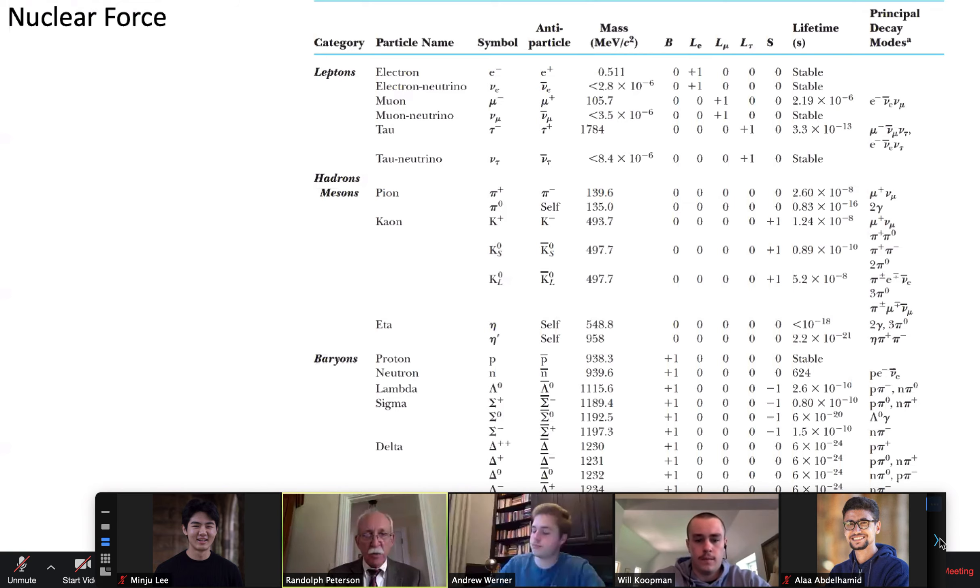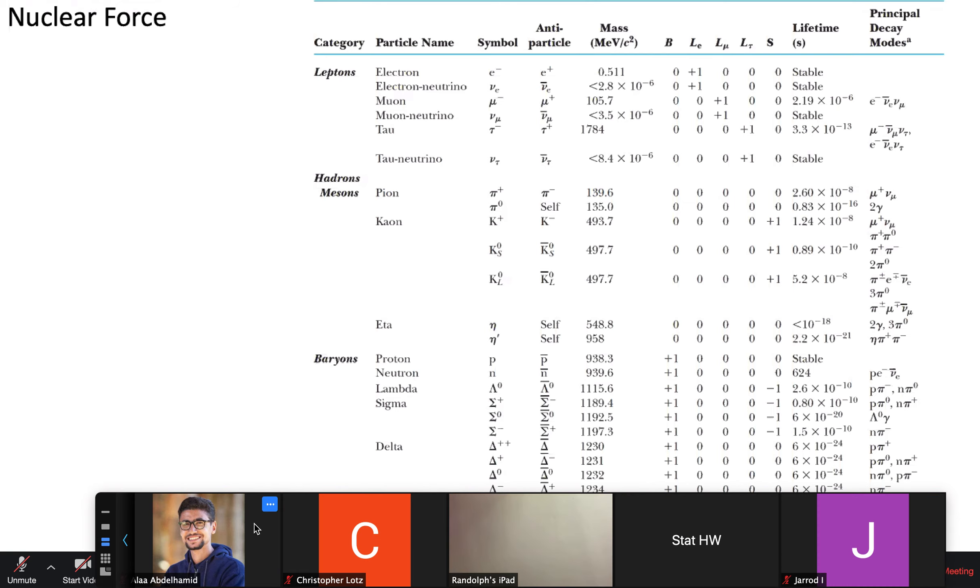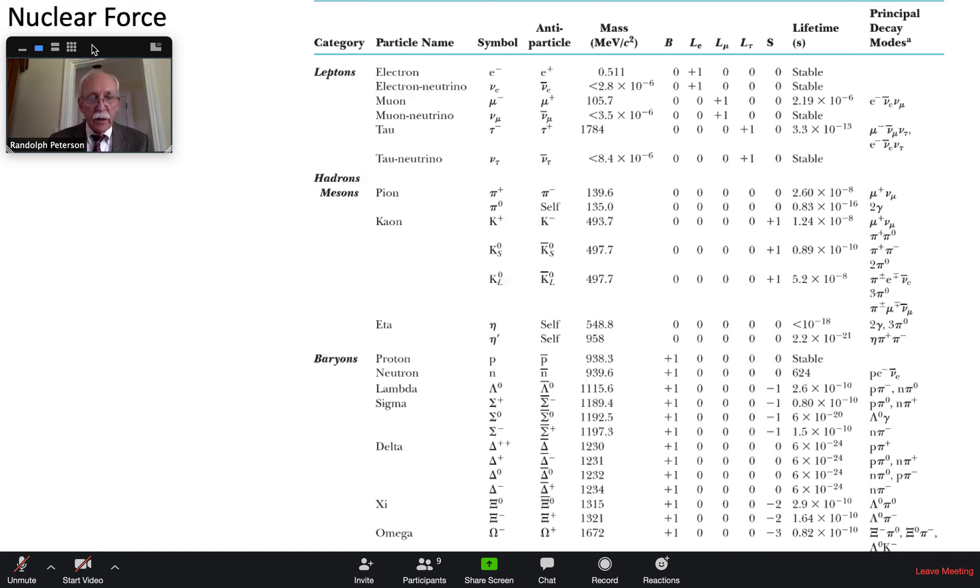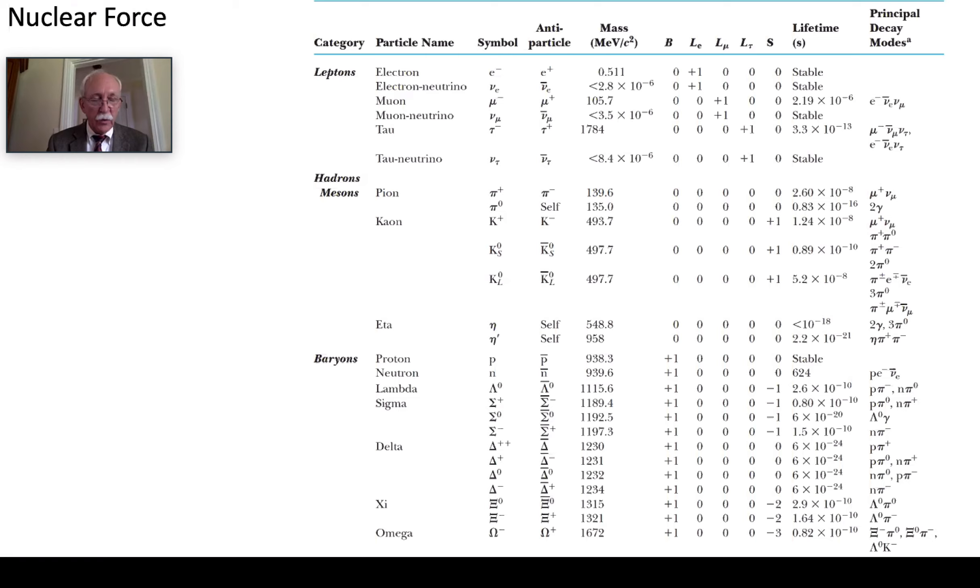So unlike charged particles neutrinos just go through everything and leave behind nothing until they totally interact with something. So you can have a chlorine and the chlorine if it absorbs a neutrino will turn into argon and you can detect the argon.